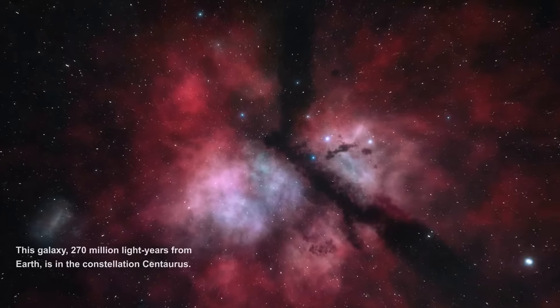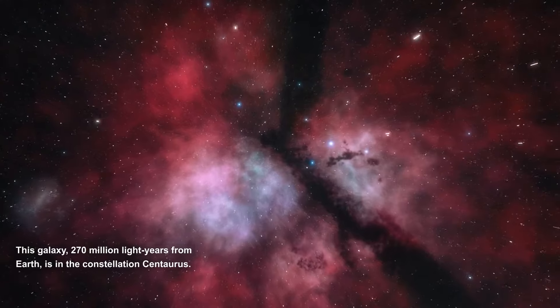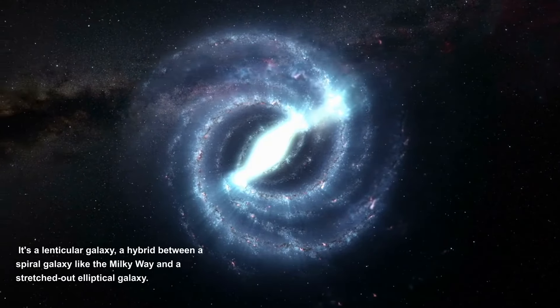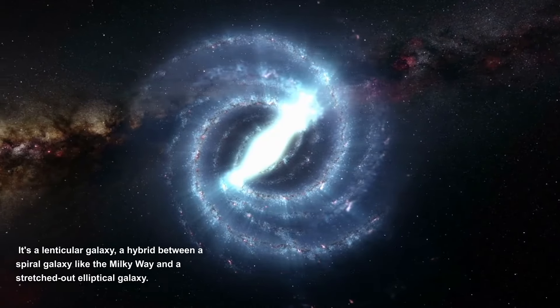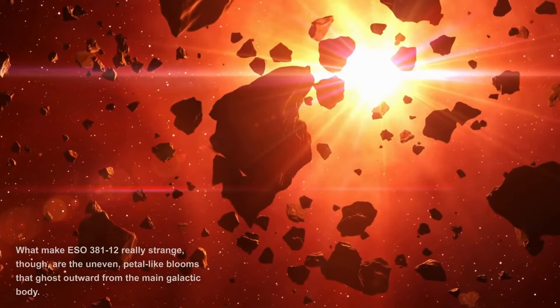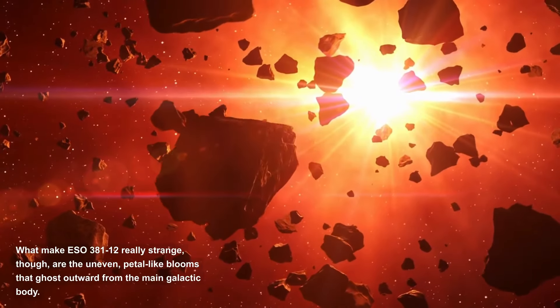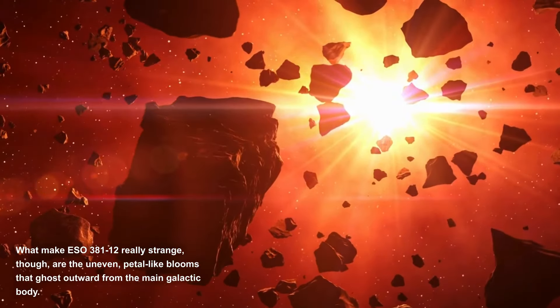Galaxy in Bloom. This galaxy, 270 million light-years from Earth, is in the constellation Centaurus. It's a lenticular galaxy, a hybrid between a spiral galaxy like the Milky Way and a stretched-out elliptical galaxy. What make ESO 381-12 really strange, though, are the uneven, petal-like blooms that ghost outward from the main galactic body.